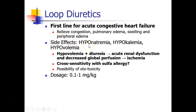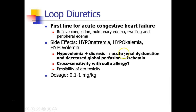Side effects of loop diuretics are easy to predict. Because they block the reabsorption of sodium, we expect patients will become hyponatremic. Potassium is also lost, so they will become hypokalemic, and hypovolemia is a side effect if we over-diurese the patient. Importantly, diuretics may increase urine output, but not all patients with low urine output need diuresis. If a patient is hypovolemic and you give them a diuretic, you could actually injure the kidney and cause acute renal dysfunction.